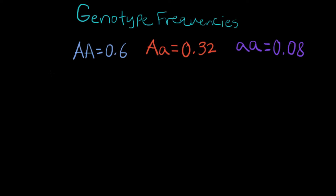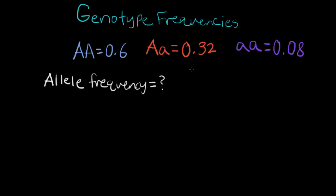So let's say you're given the genotype frequencies for a certain genotype consisting of the big A dominant allele and the little a recessive allele, and you're asked to find the allele frequency from these genotype frequencies. We want to find the allele frequency. We know that the genotype frequency for the homozygous dominant is 0.6, the heterozygous is 0.32, and the homozygous recessive is 0.08. All of these are going to add up to equal one because the genotype frequencies are just a proportion of the entire genotypes in the population.